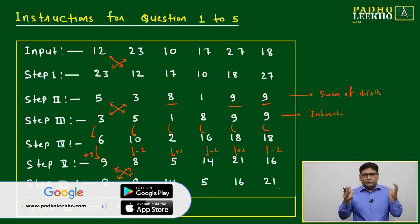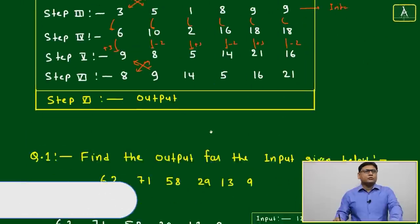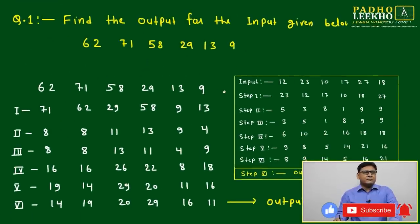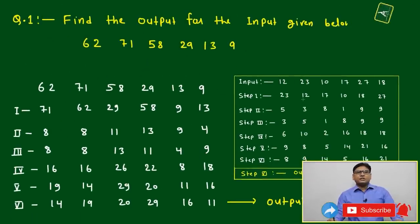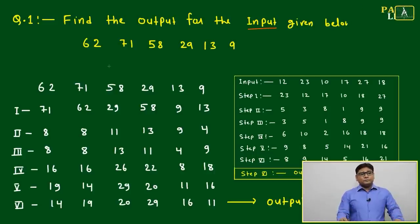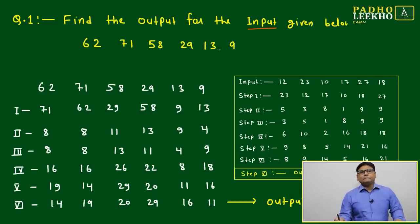Since the brain may not retain all this immediately, we keep a reference table beside every question to avoid confusion. Question 1: find the output for the input 62, 71, 58, 29, 13, and 9.